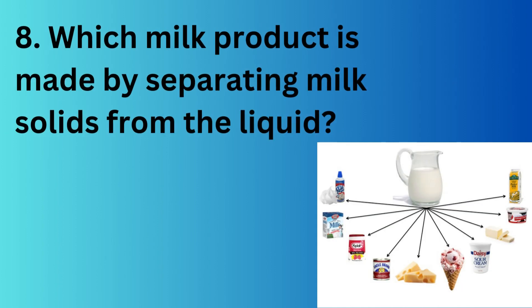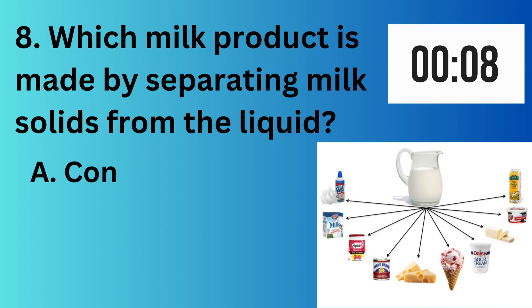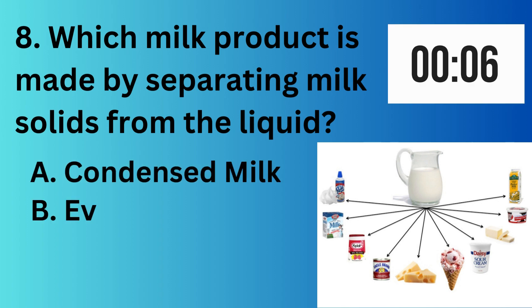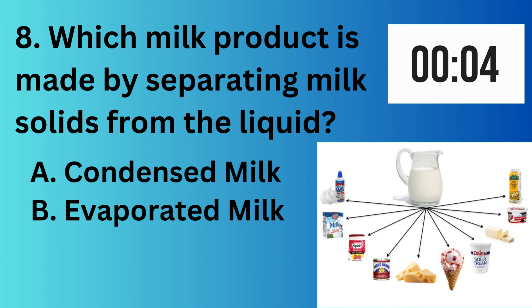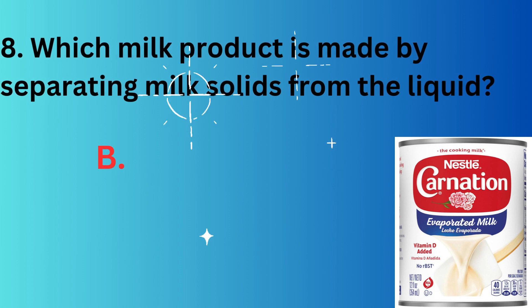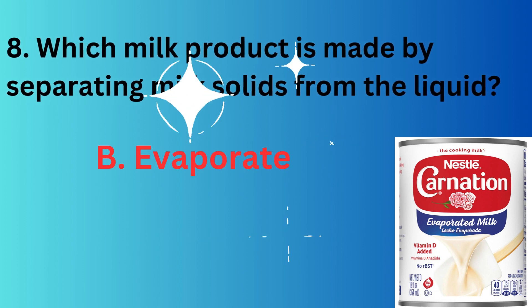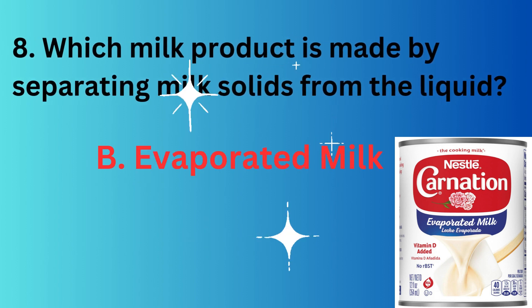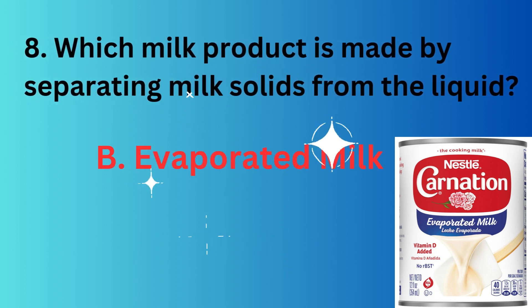Which milk product is made by separating milk solids from the liquid? A. condensed milk, B. evaporated milk, C. whole milk, D. skim milk. The correct option is option B, evaporated milk.